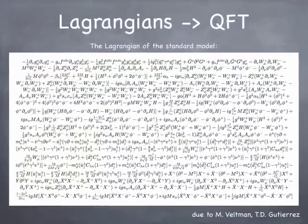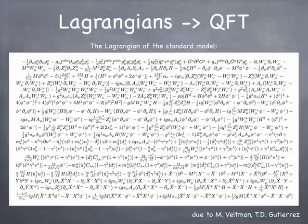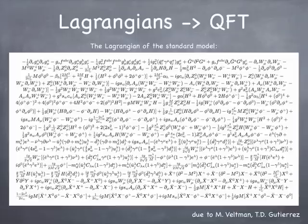First of all, we need to talk about Lagrangians. This monstrosity is the complete Lagrangian of the Standard Model, at least in one formulation. This is due to Veltman and Guterres — Guterres just typed it up. Veltman describes it in his book on the Standard Model, and Guterres put all the pieces together into one enormous Lagrangian.